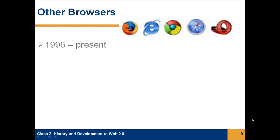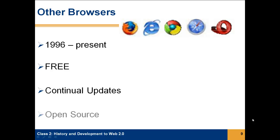Other browsers were developed from 1996 to the present. One difference from Netscape — they were free. They were continually updated, and the updates were free. Many of them were open source, meaning that individual developers could write applications that work with these browsers. This was a turning point in the way that software was produced, which is very characteristic of Web 2.0 applications today.